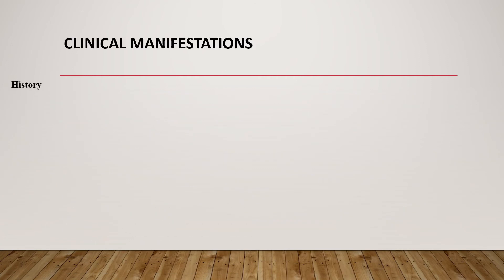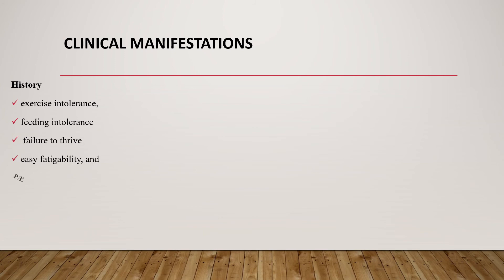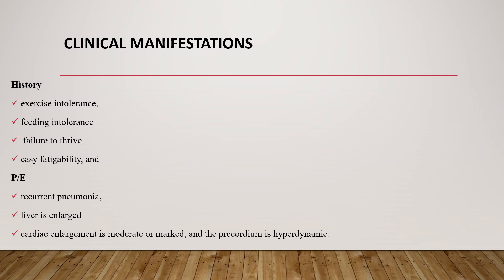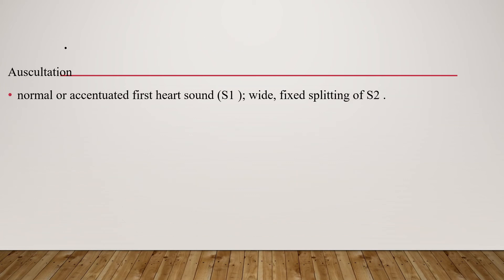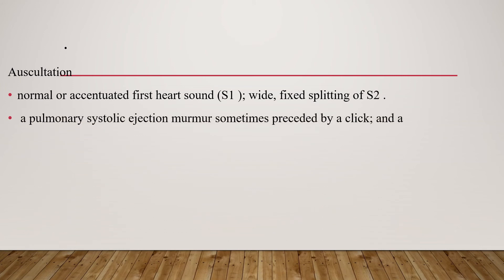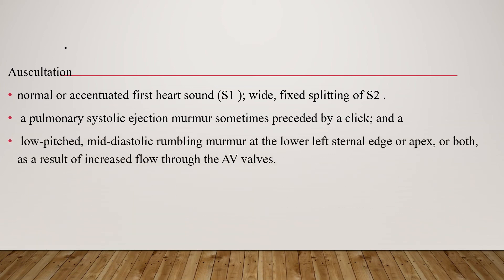Clinical manifestations of AV septal defect include exercise intolerance, feeding intolerance, failure to thrive, and easy fatigability. Physical examination may reveal recurrent pneumonia, liver enlargement, moderate to marked cardiac enlargement, and a hyperdynamic precordium. Auscultatory findings include normal or accentuated first heart sound, wide and fixed splitting of S2 due to pulmonary hypertension, a pulmonary systolic ejection murmur preceded by a click, and a low-pitched mid-diastolic rumbling murmur at the lower left sternal edge or apex as a result of increased flow through the AV valves.